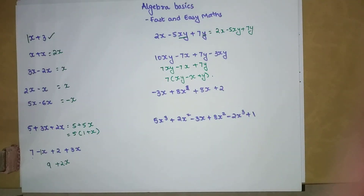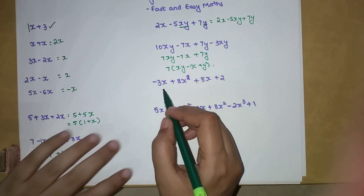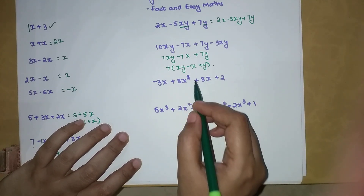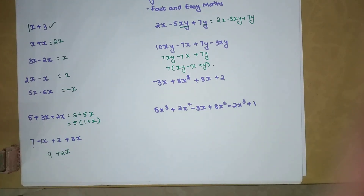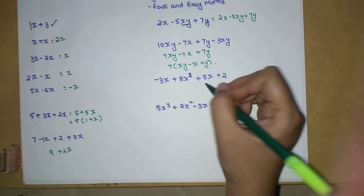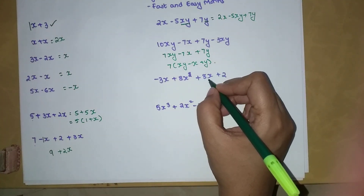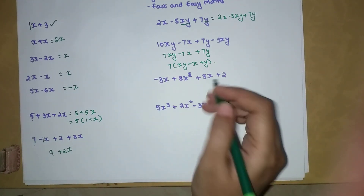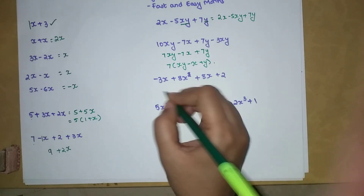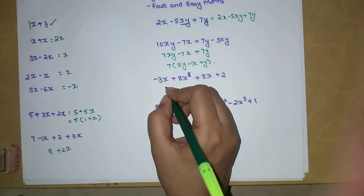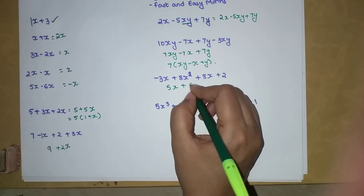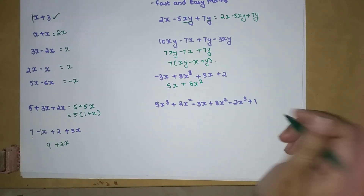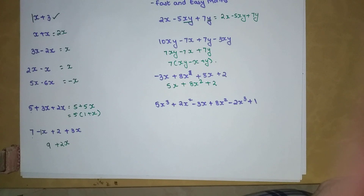Next we have minus 3x plus 8x² plus 8x plus 2. The like terms here are minus 3x and 8x, giving us minus 3 plus 8 equals 5x. The 8x² has no matching term so it stays as written. And the constant 2 also stays as it is since there are no other constants.